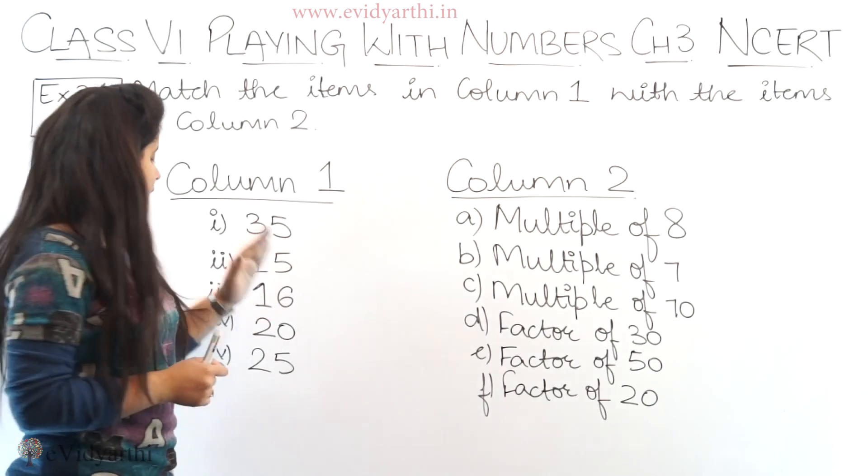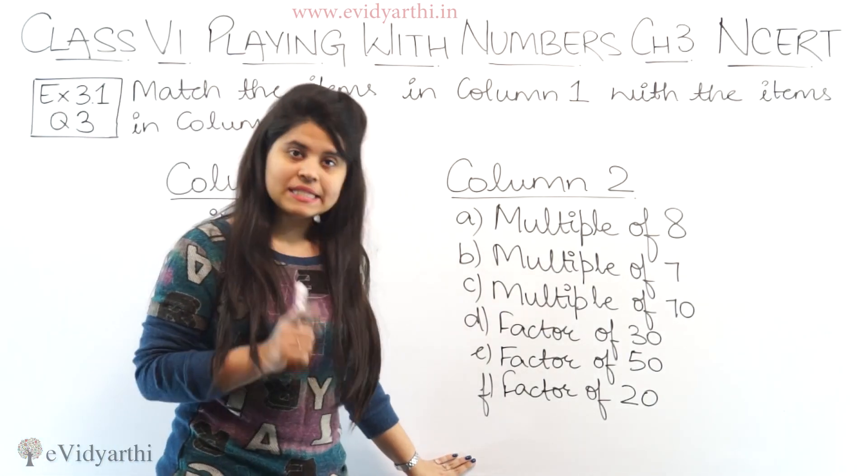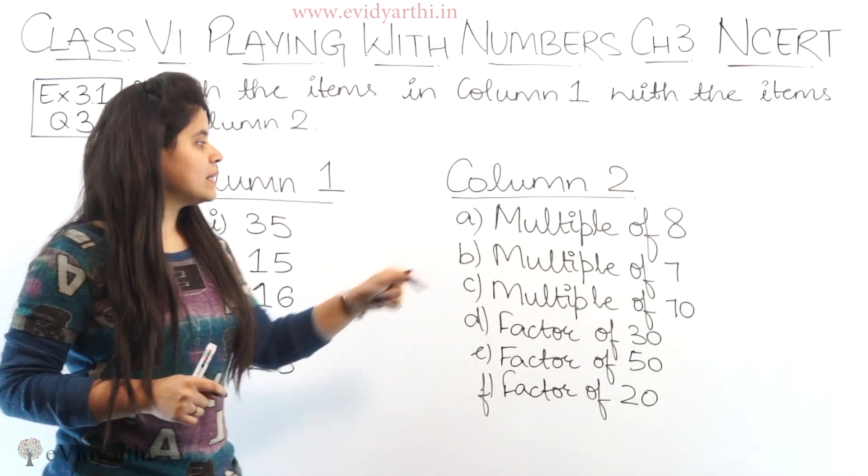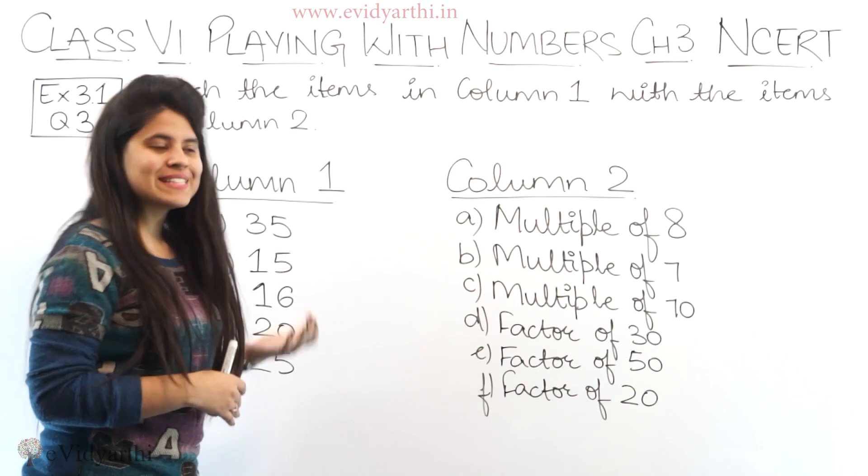What we'll do is, also notice one thing that here we have 5 options and here we have 6 options. Let's do one thing. We'll start from here and then see in column 1 which is its answer.